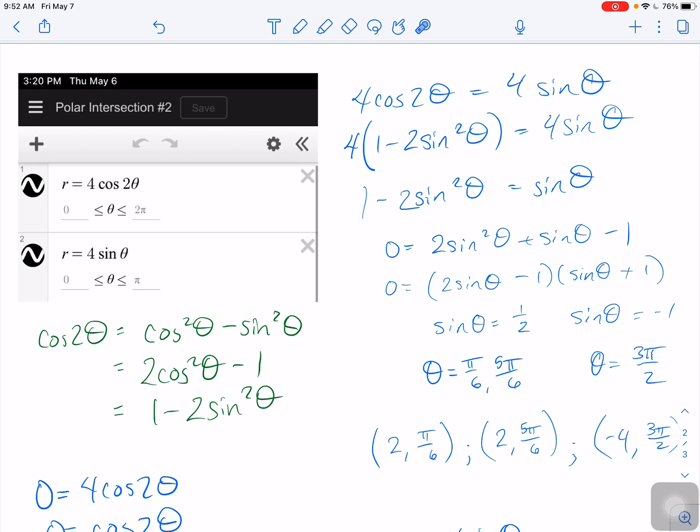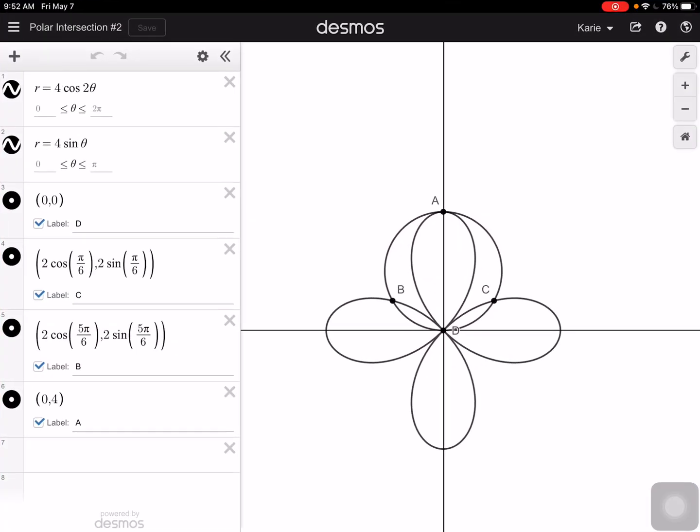So we're going to acknowledge that, but then just kind of move on. So on the quiz, I might give you a graph like this and say, find the r and theta value of a, b, and c, and kind of ignore d. Or I might make sure that, there are cases where...